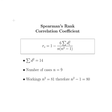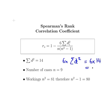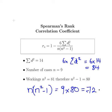The sum of D squared is 14 and the number of cases N is 9. So 6 times the sum of D squared equals 6 times 14, which equals 84. And N times (N squared minus 1) equals 9 times 80, which equals 720.